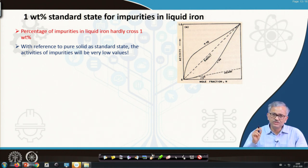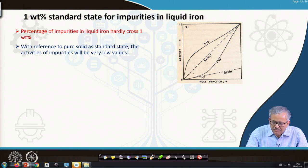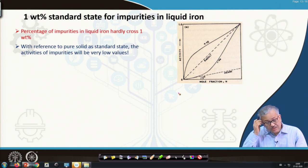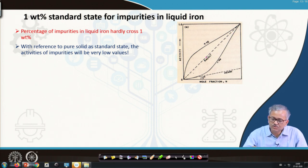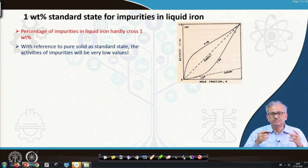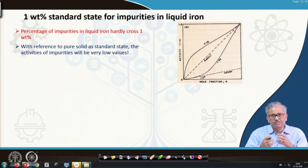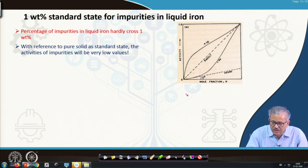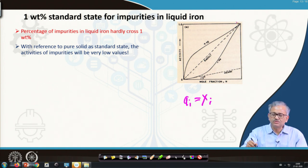Activity does not have any absolute value; it is always expressed as a relative value with reference to some reference. Here the reference is pure solid as the standard state — if the solid or liquid is pure, we assign activity equal to 1. For an ideal system, Raoult's law says activity equals mole fraction; this is the Raoultian scale.